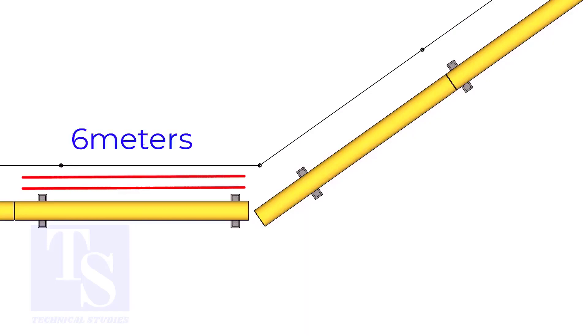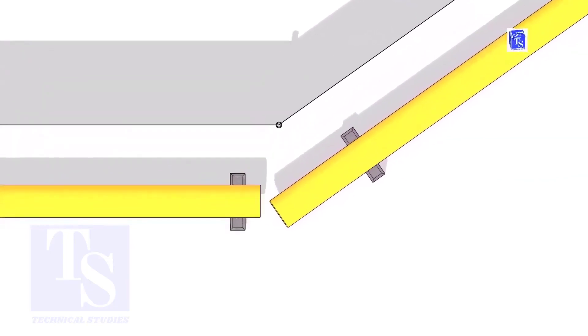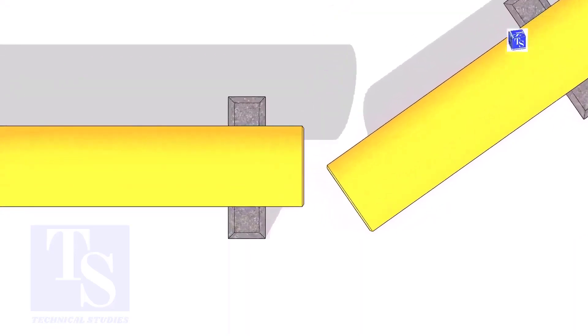The pipe shall be parallel to the fencing, not necessarily the entire length, but at least 6 meters on both sides. It's not necessary that the center lines of both pipes are in a line.